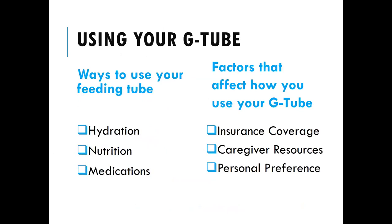The three main ways to use your feeding tube are: first, for hydration. Dehydration is a common problem in ALS — it can cause constipation, fatigue, and secretions that are difficult to manage. Hydration is very important, so you can use the tube as an easy way to meet your daily water needs.